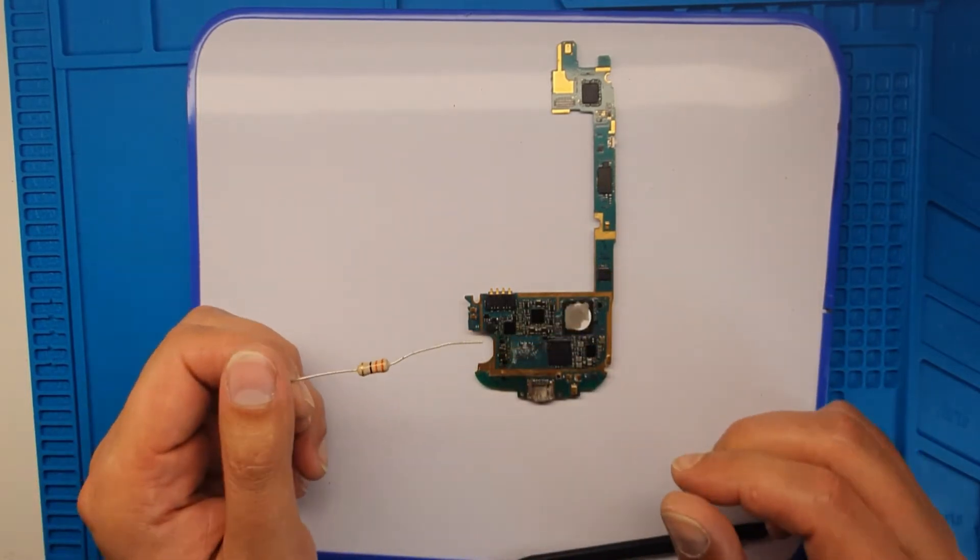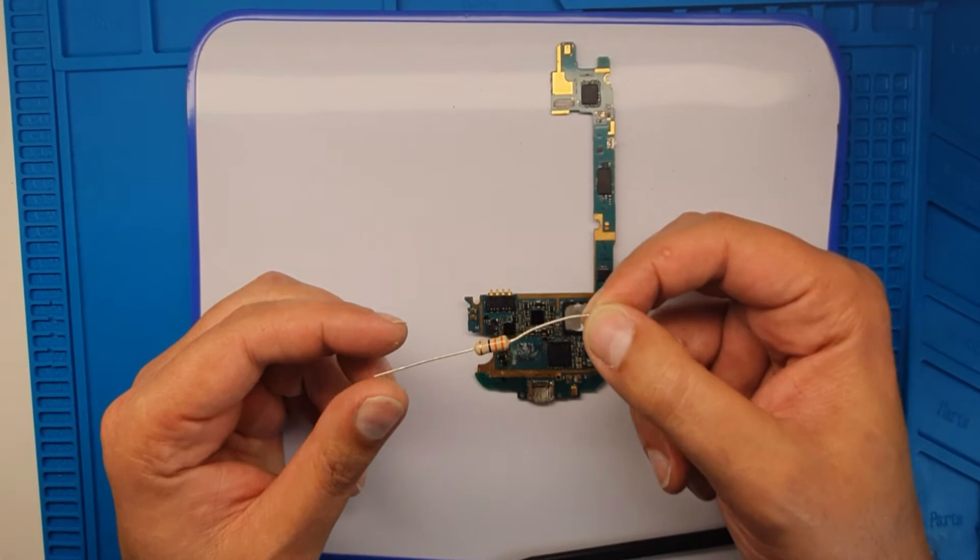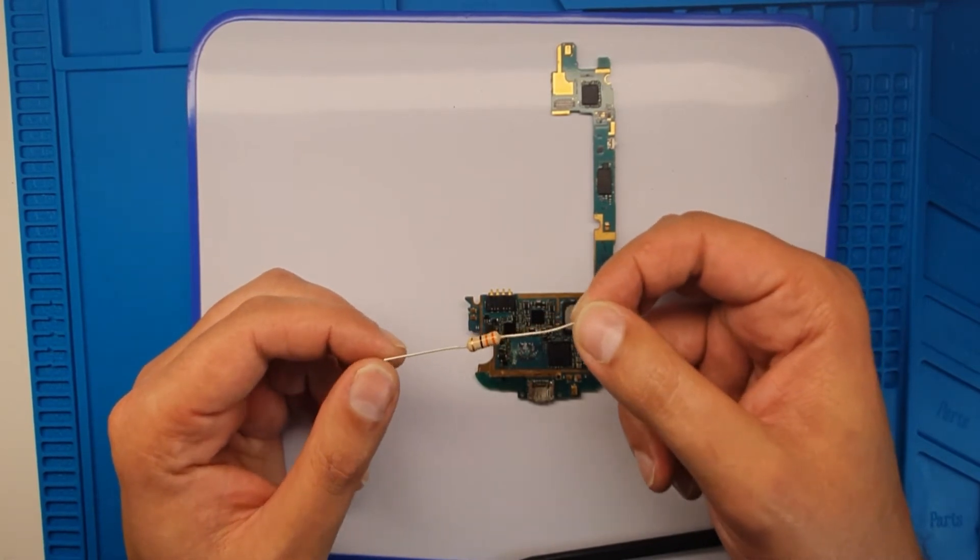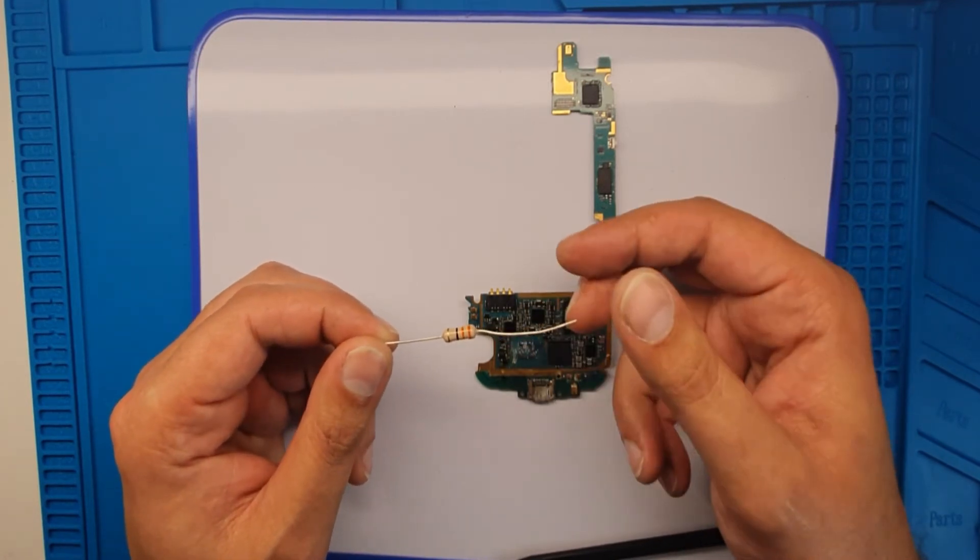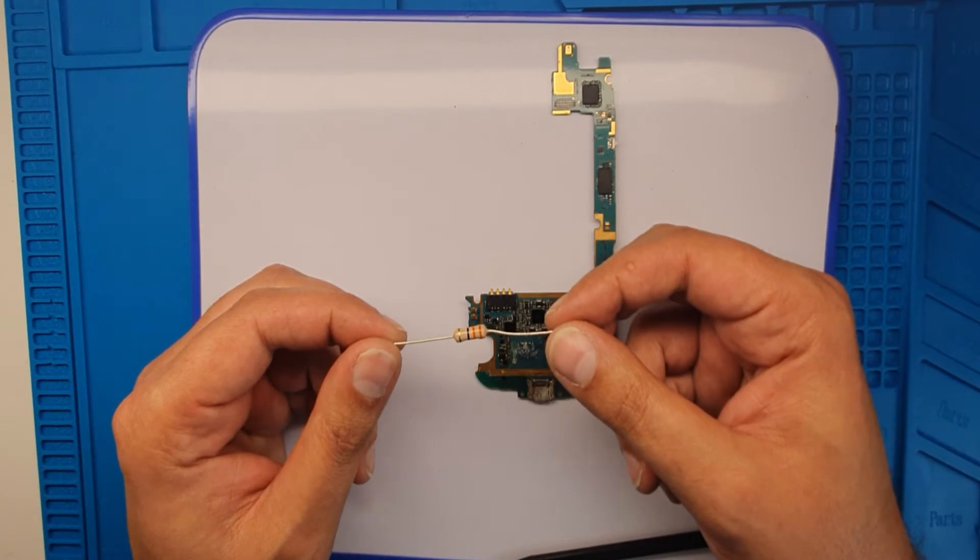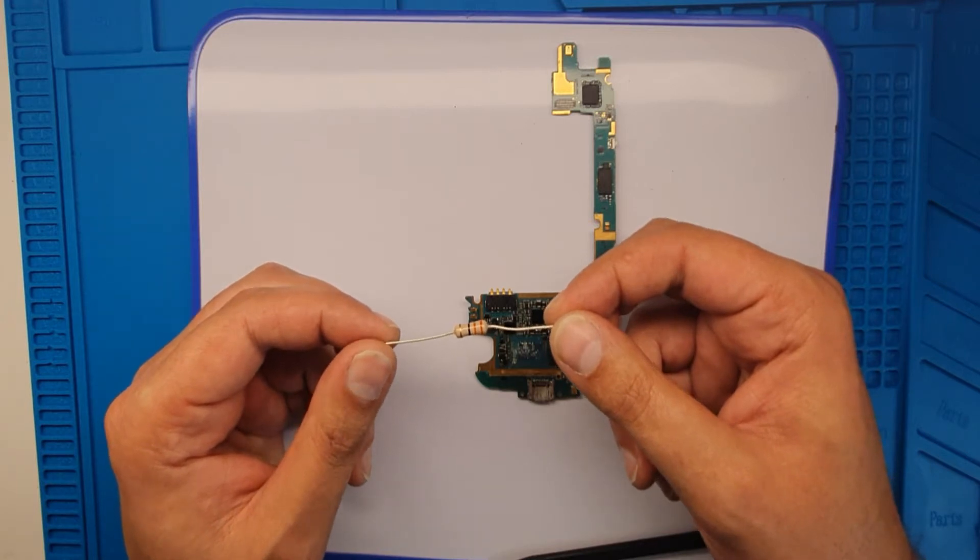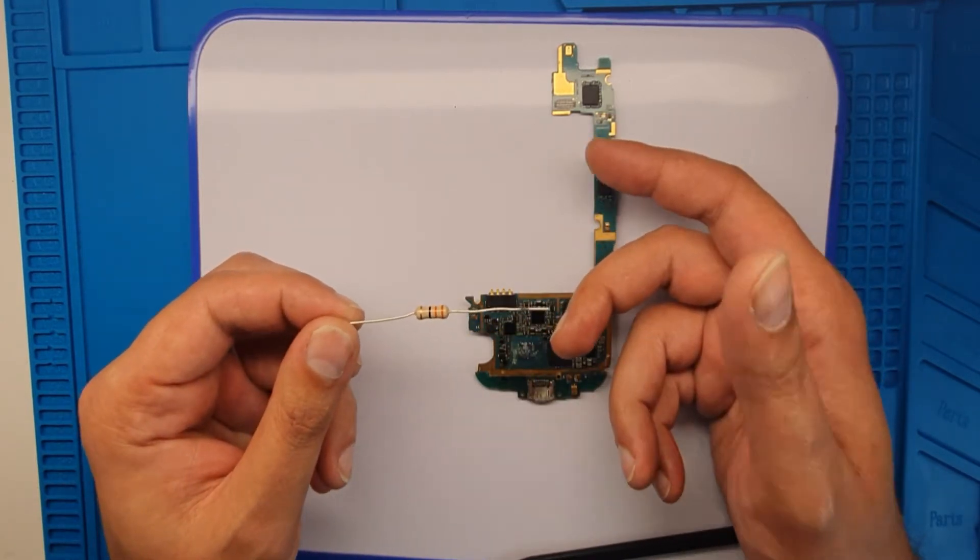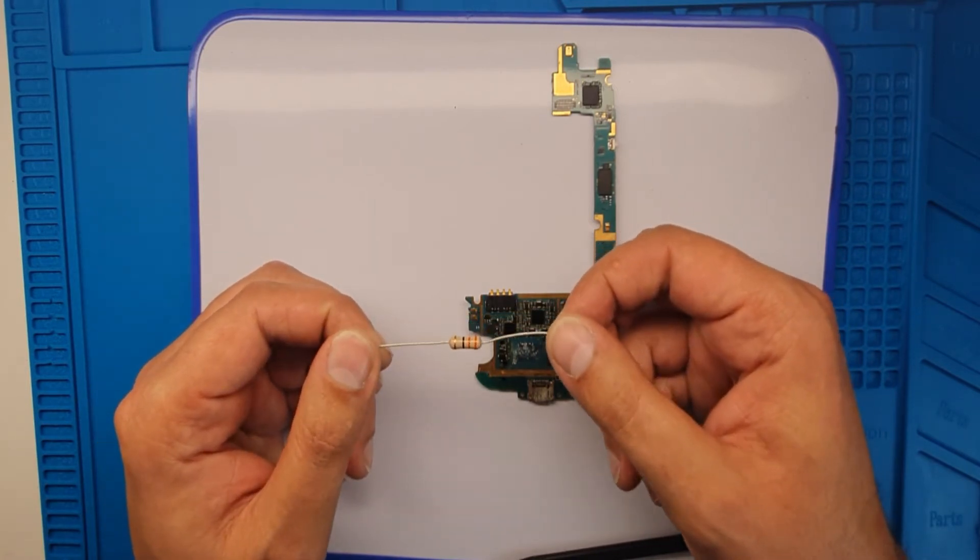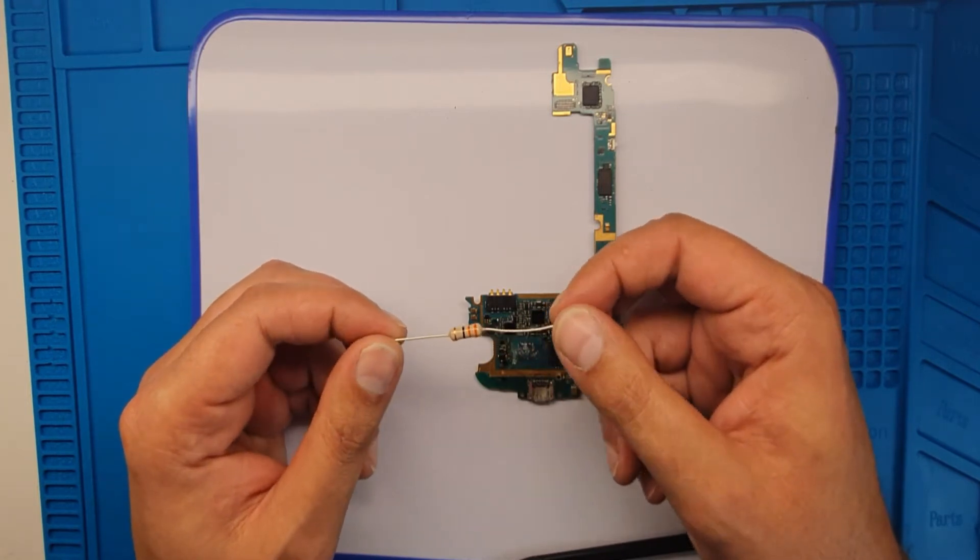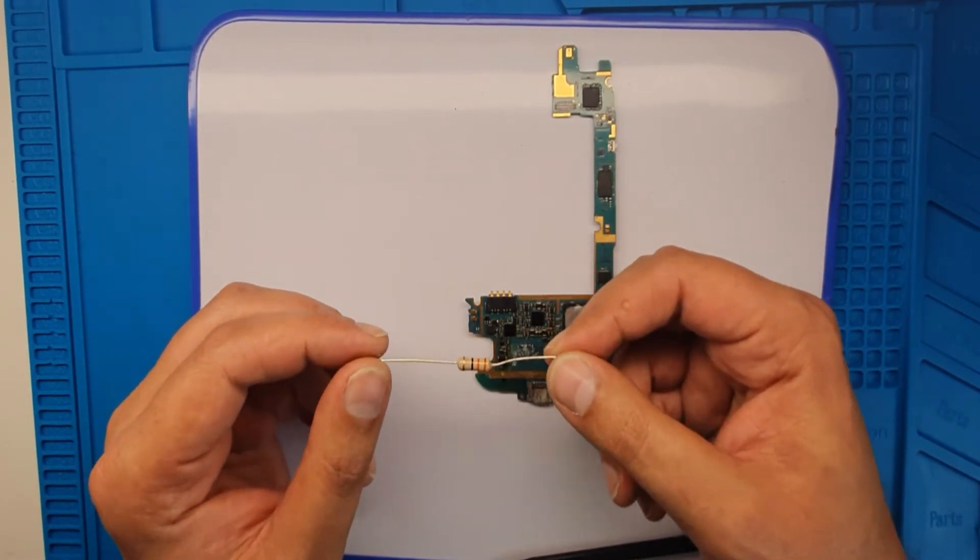If I say scientifically, a resistor is a passive two-terminal electrical component that implements electrical resistance as a circuit element. In electronic circuits, resistors are used to reduce current flow, adjust signal levels, and divide voltages. But it's hard to understand for beginners, so I have a simple explanation.